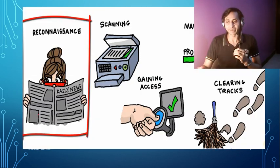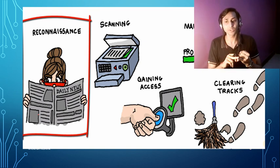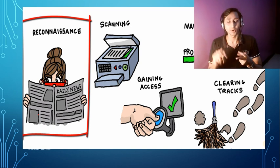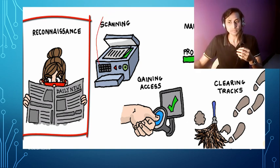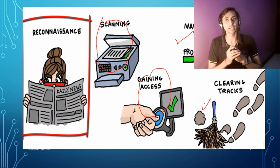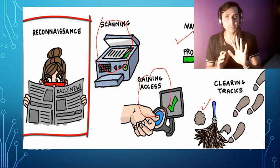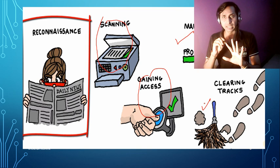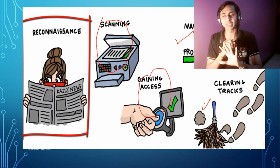Graphically, the five phases work as follows: first, reconnaissance — gather information from newspapers, media, Google, the organization's website, employees, or phone calls; then scanning — scan the network using tools; then gaining access; then maintaining access; and finally clearing tracks. So the five steps for any hacking activity are: reconnaissance, scanning, gaining access, maintaining access, and clearing tracks.